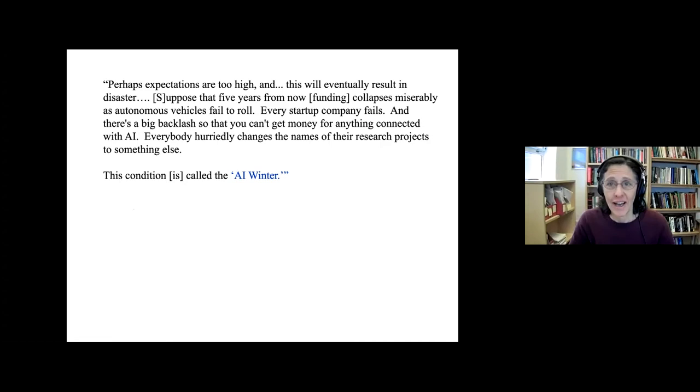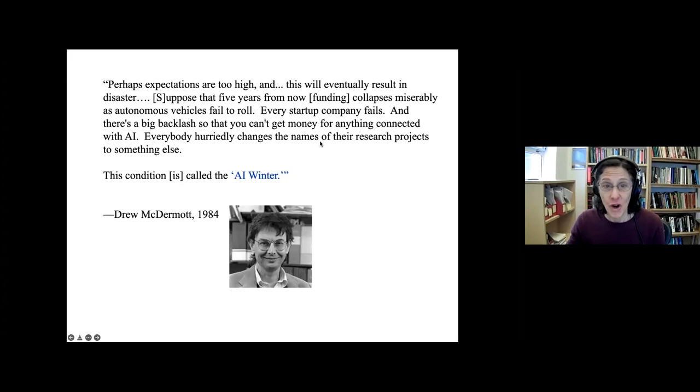So I wanted to read this quote from an AI researcher: perhaps expectations are too high, and this will eventually result in disaster. Suppose that five years from now, funding collapses miserably as autonomous vehicles fail to roll. Every startup company fails, and there's a big backlash, so you can't get money for anything connected with AI. Everybody hurriedly changes the names of their research projects to something else. This condition is called the AI winter. Well, interestingly, this was actually written in 1984 by Drew McDermott, an AI researcher at Yale.